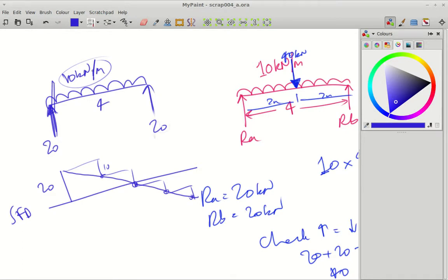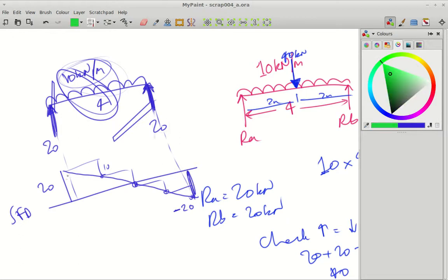So we've gone up 20 and we're going to come down a total of 40 because it's 10 times 4. So by the time we get to here we're going to have gone down minus 20. So by the time we reach this arrow we've gone to minus 20. Then you just come up for Rb, so up there and it closes it. So you end up with a diagram that looks like that.